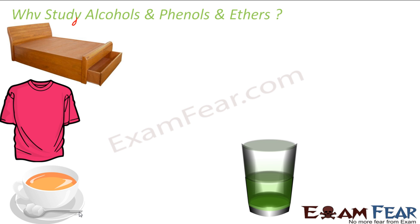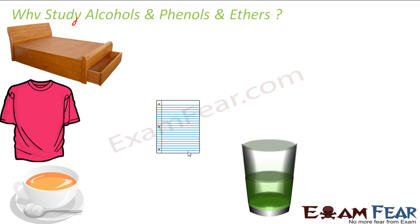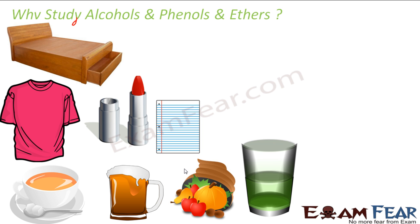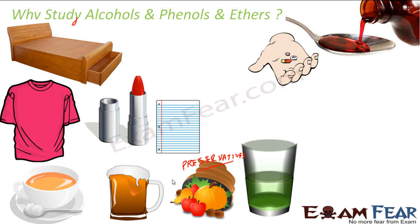Sugar is also made of these compounds. The cotton we use to wear is also one of the alcohols, phenols and ethers family. They are used to make paper. Beverages — the moment you think of alcohol you think of drinks, and that is also alcohols. They are widely used in cosmetics. They are also used as preservatives for fruits, because there is a time gap between when fruits are cultivated and when they are consumed, so preservation is needed.